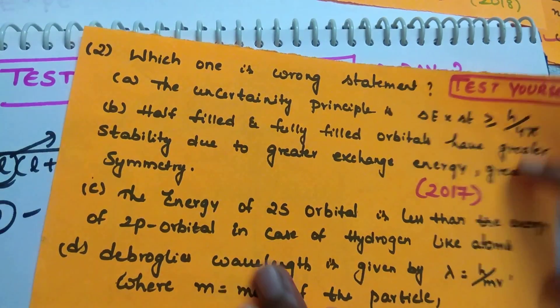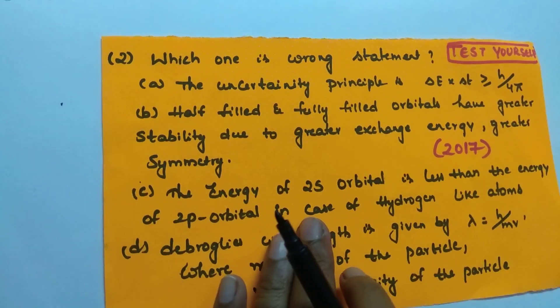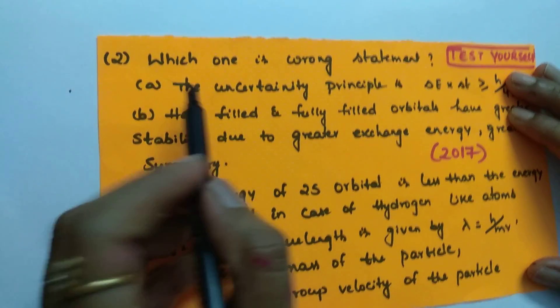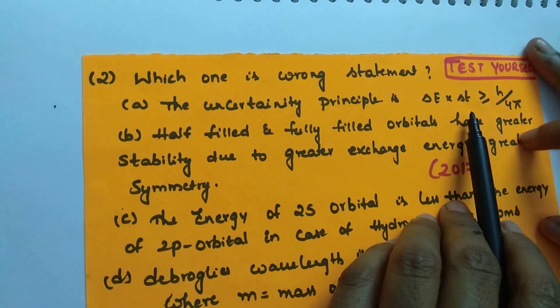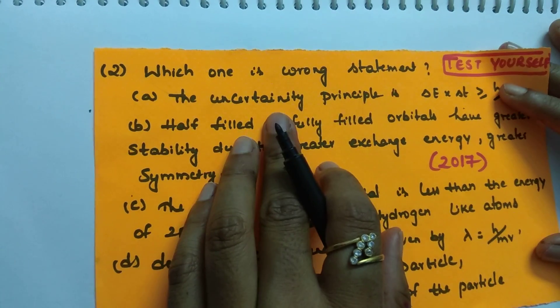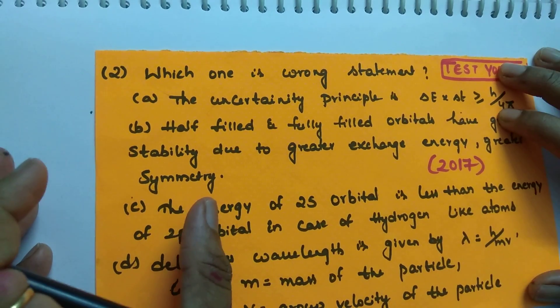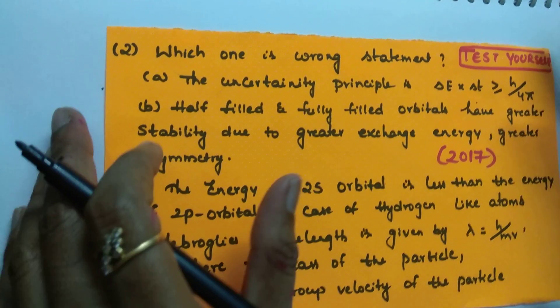Next question is, which one is the wrong statement? See this question, student. The uncertainty principle is, this is the formula given. Let us see this. What is Heisenberg uncertainty principle? It is impossible to measure both the position as well as momentum simultaneously with high precision.